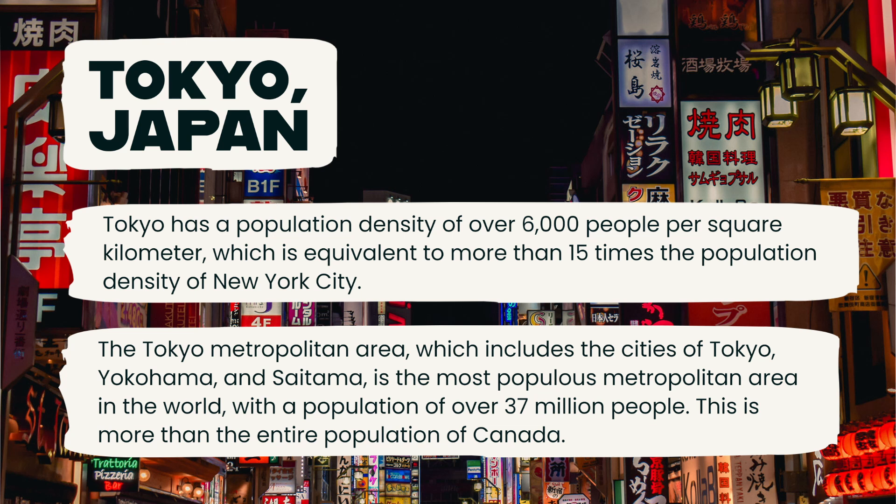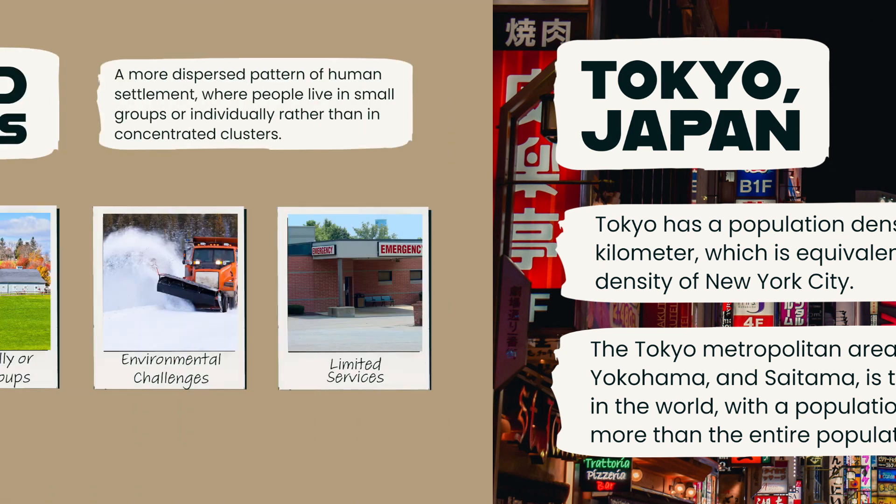Additionally, the Tokyo metropolitan area, which includes the cities of Tokyo, Yokohama, and Saitama, is the most populous metropolitan area in the world, with a population of over 37 million people. This is more than the entire population of Canada.